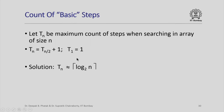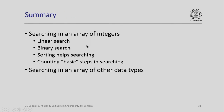How many basic steps does binary search require? If T(n) is the maximum count of steps when searching in an array of size n, then in one step we do one comparison, and then search in an array of size n/2, giving T(n) = T(n/2) + 1. When the array has just one element the count is 1. Solving this recurrence gives T(n) ≈ ⌈log₂ n⌉. So unlike linear search where T(n) = n, binary search achieves T(n) = log₂ n — binary search uses exponentially fewer basic steps than linear search.